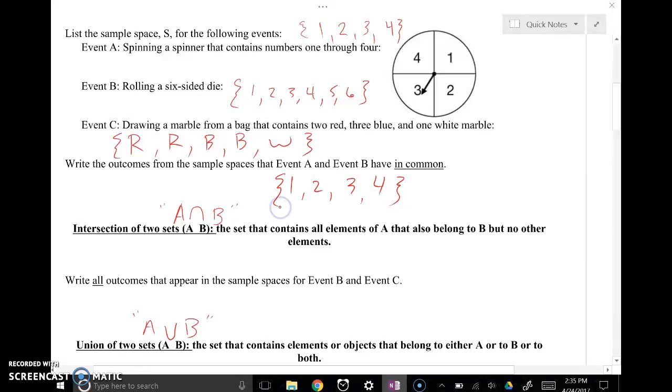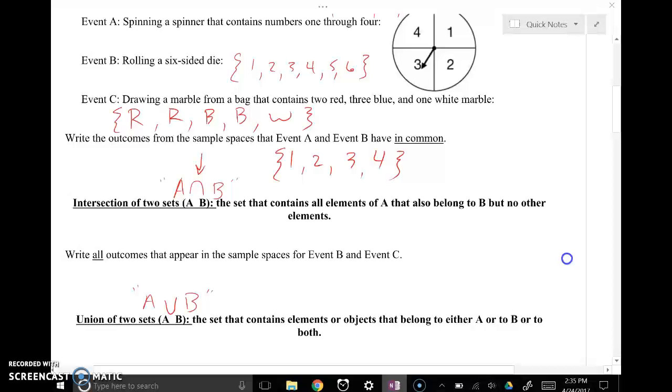So when we talk about things having stuff in common, that's what we call the intersection. And it's denoted by that symbol right there, that upside-down U. The intersection is what the two sets have in common.